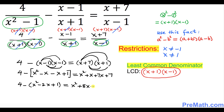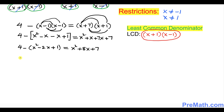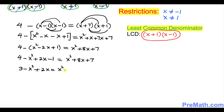When we distribute the negative sign outside the parentheses it changes all the signs, so the left becomes negative x squared plus 2x minus 1. Combining with the 4, we get 3 minus x squared plus 2x. Now I want to move everything to the right-hand side so we have 0 on the left.